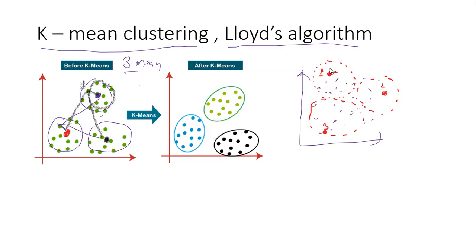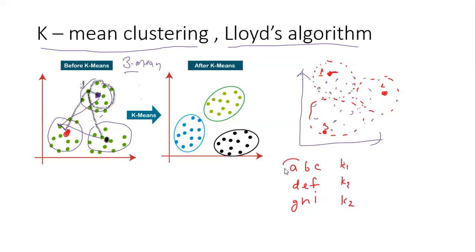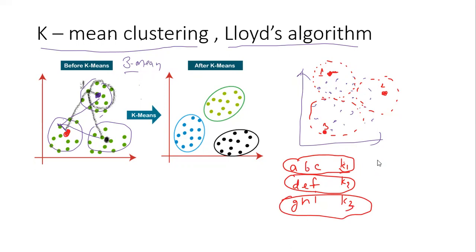So in the Lloyd Algorithm, what we do is recompute the centroid from the current cluster points. Let's say we have three points in the first cluster, three points in the second cluster, and three points in the third cluster. Using these sets of points, we recompute the values of k1, k2, and k3, and we mark them k-dash — the new centroid positions.